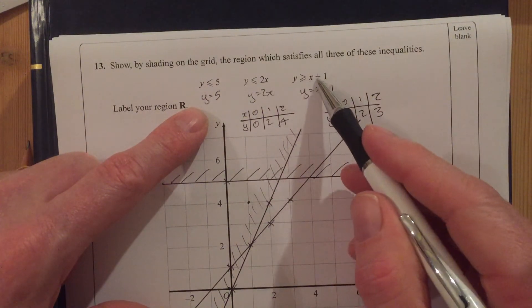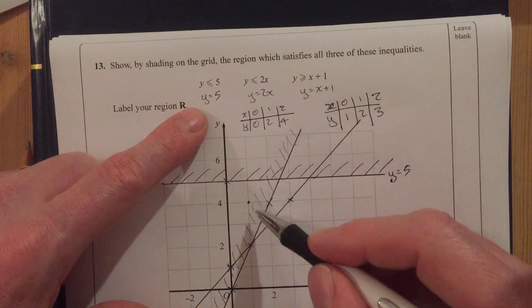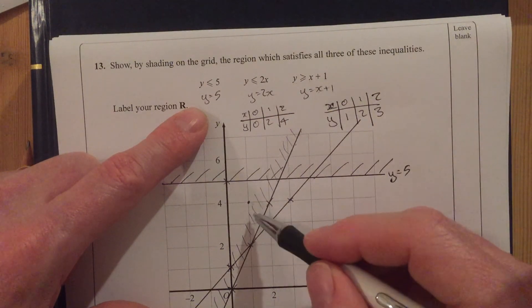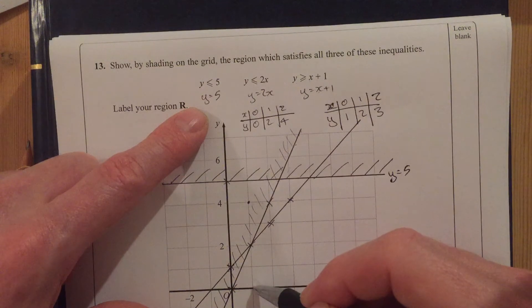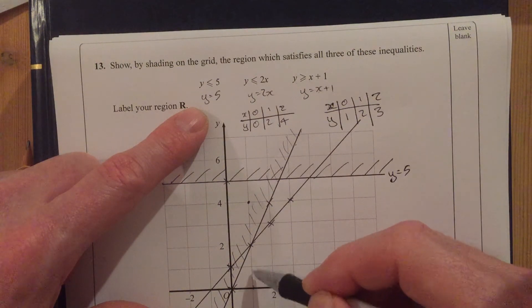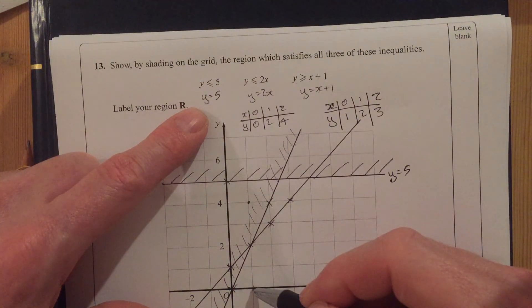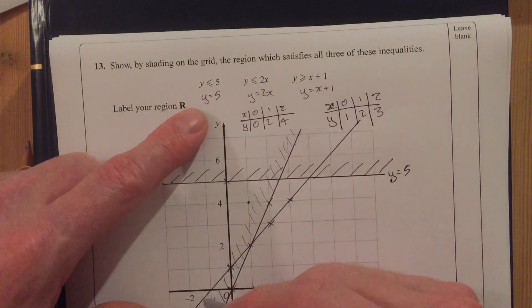And then the last one. y is bigger than x plus 1. y is bigger than x plus 1. So y is 4. x is 1. Is that true? Yes, it is. So I want this side of this line.